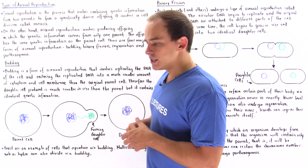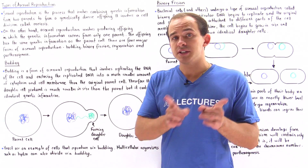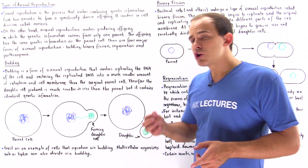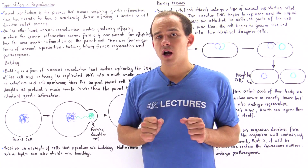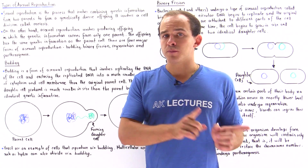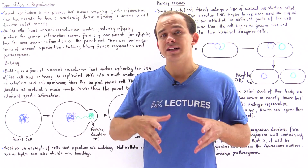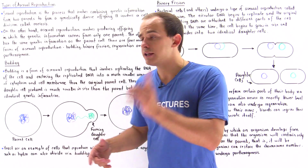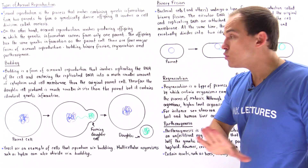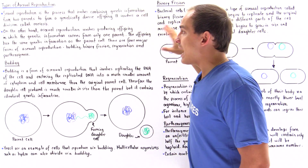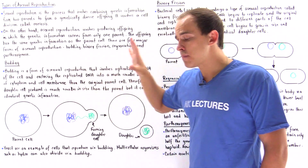Other organisms — both unicellular and multicellular — undergo a second method known as asexual reproduction. In asexual reproduction, the offspring contains genetic information that came directly from a single parent cell, which is why the offspring generally have the same exact genetic information as the parent cell.